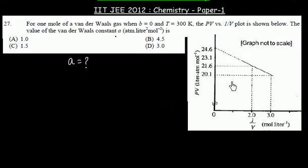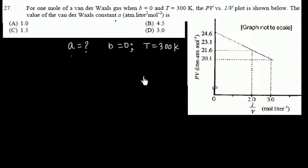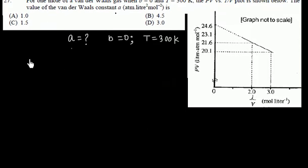Experimental fact is given. We have been also given B is equal to 0 and temperature is given 300 Kelvin. Now if you remember Van der Waals equation, that is (V - nB)(P + An²/V²) is equal to nRT.